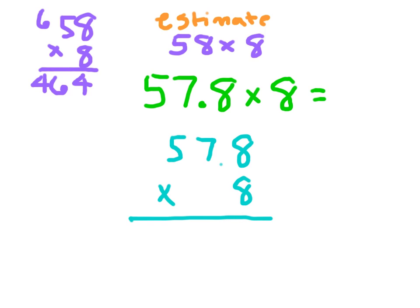I've rewritten this problem as 57 and 8 tenths times 8. We're going to go about our multiplication ignoring the decimal point for now. 8 times 8 is 64, write 4 and regroup 6. 8 times 7 is 56, plus 6 is 62, write 2 and regroup 6. 8 times 5 is 40, plus 6 is 46. We ignore the decimal point — our answer should be around 464. So we place our decimal point so our answer is very close to that, and that's where we place our decimal point.